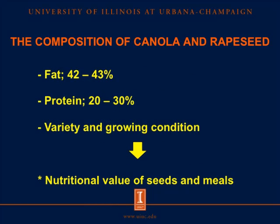For the composition of canola and rapeseed, canola and rapeseed themselves contain fat ranging from 42% to 43%, and crude protein ranging from 20% to 30%, depending on varieties and growing conditions in different regions. These differences could affect nutritional values and consequently affect nutritional values in the meals.